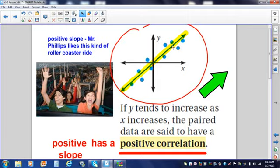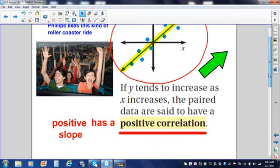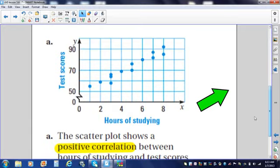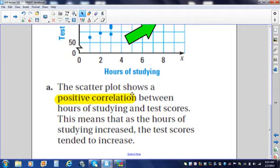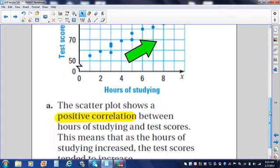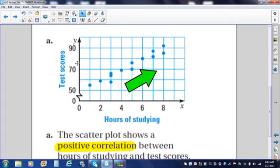Mr. Phillips likes this type of rollercoaster. So, let's look at an example of a positive correlation. So, here we have a scatterplot. You do not have to draw this one. Just watch. Notice again how all the dots are going up and to the right. We have test scores and hours of studying. The scatterplot shows a positive correlation between the hours of studying and test scores. This means that as the hours of studying increase, the test scores increase. So, as we study more, our test scores went up. This is a positive correlation.